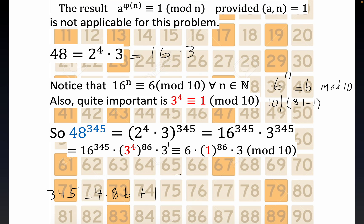Obviously 1 to the 86 is 1. So this is congruent to 6 times 3, which is 18, and that is congruent to 8 mod 10. We've seen that doing modulo 10 on a number is equivalent to finding its last digit, so the answer to the problem is 8.